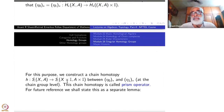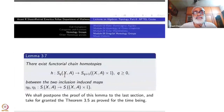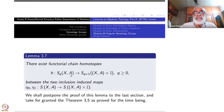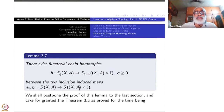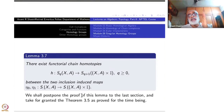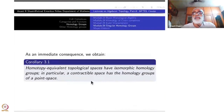We state this as a separate lemma: there exist functorial chain homotopies H_q(X,A): S_q(X,A) → S_{q+1}(X×I, A×I), for q ≥ 0, between the two inclusion maps η₀ and η₁. We will postpone the proof of this lemma to the last section and take it for granted that homotopy invariance is proved for the time being, and proceed to use it.